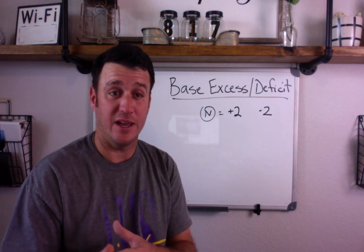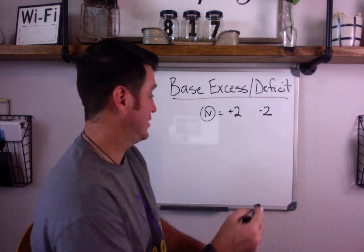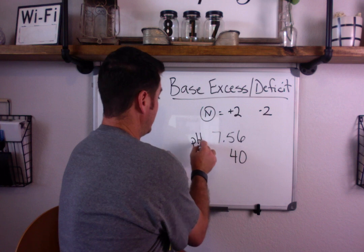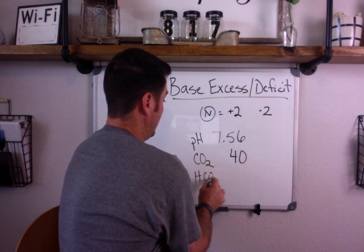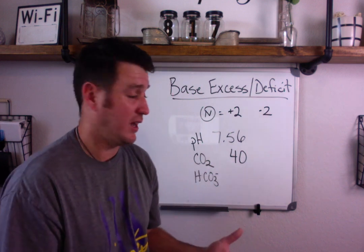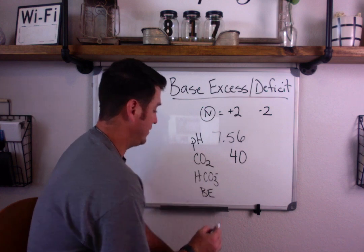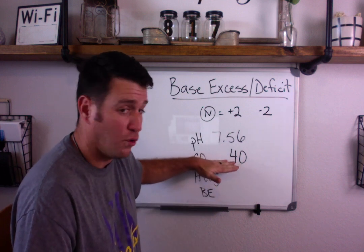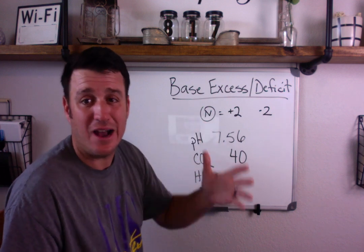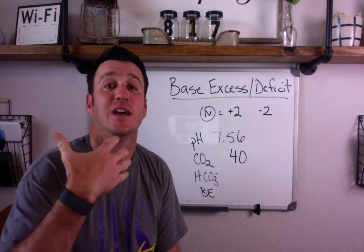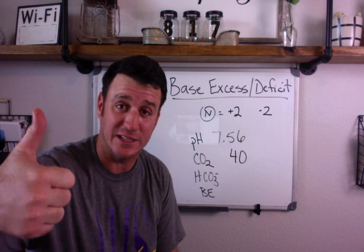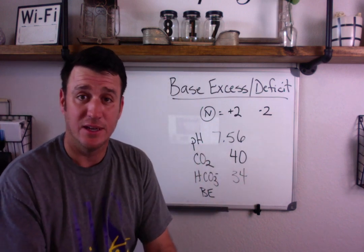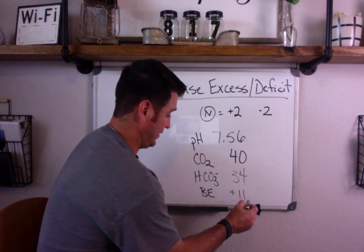Let's look at some examples, starting with uncompensated metabolic alkalosis. So we have pH 7.56, CO2 is 40 — I'm putting pH, CO2, and bicarb on the screen, and then base excess. Looking at this blood gas, you have an alkalotic pH and a normal CO2, so you already know your bicarb is going to be elevated — it's the component raising the pH. Let's say bicarb is 34; in this case you would have a base excess of plus 11.